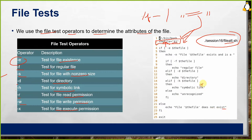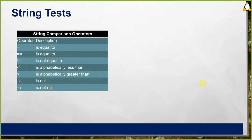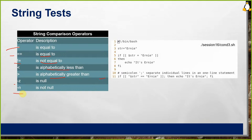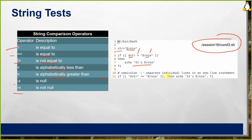For string comparisons, the operators are: = or == for equality, != for not equal, < for alphabetically less than, > for alphabetically greater than, -z for is null, and -n for is not null. Example in condition3.sh: if a string has a particular value, it is true; otherwise no action. Semicolons can separate individual commands on one line — you can put the entire if block including fi on a single line using semicolons.